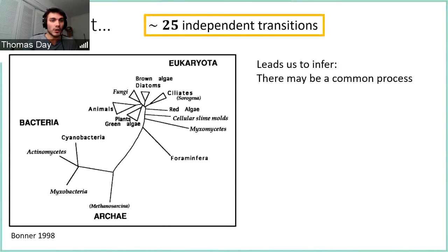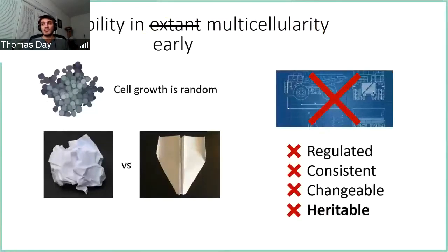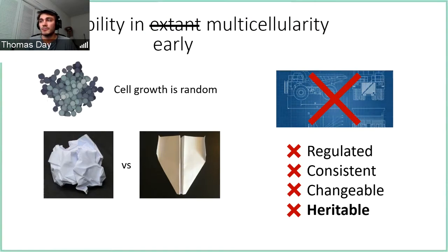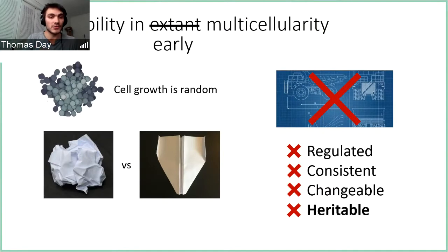The chief problem for these early disordered groups is that cell division is random. Randomness seems to pose a big obstacle — we tend to think intuitively that a randomly folded piece of paper is not going to make a good paper airplane, and not very consistent either. But this is actually kind of really bad intuition on our parts, and that's one of the things I hope to start off by convincing you of in this talk.